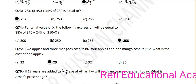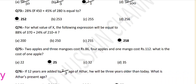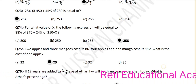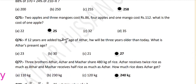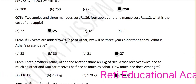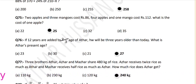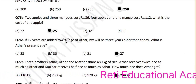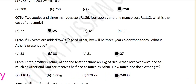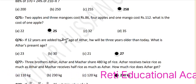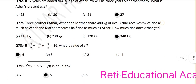Question number 76: If 12 years are added to two-thirds of Atar's age, he will be 3 years older than today. What is his present age? The answer is 27.